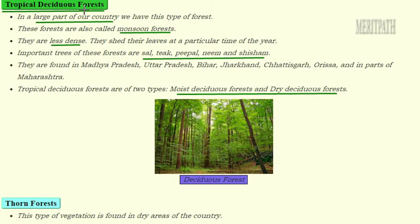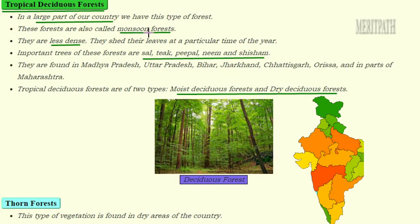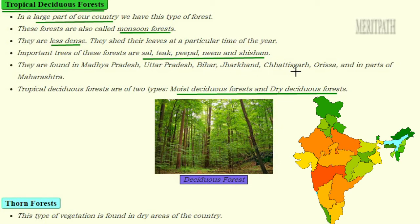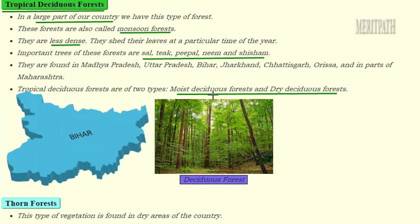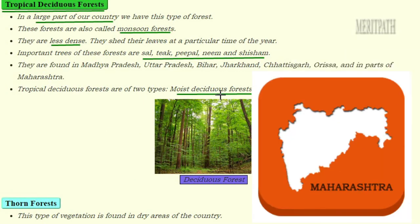The second type of natural vegetation is tropical deciduous forests. These forests are present in the larger part of India and are also known as monsoon forests. They are not very dense, and they shed their leaves at one particular time of year. Important trees in these regions are Sal, Teak, Pipal, Neem, and Shisham. These forests are found in Madhya Pradesh, Uttar Pradesh, Bihar, Jharkhand, Chhattisgarh, Orissa, and Maharashtra.